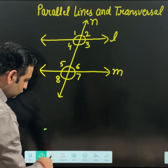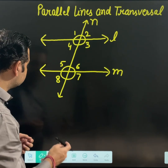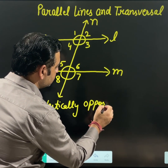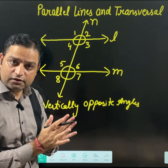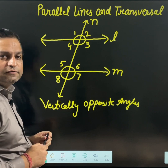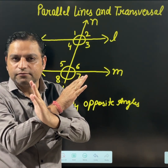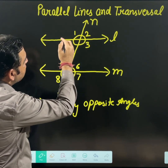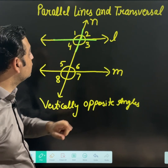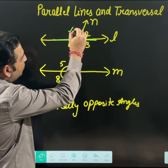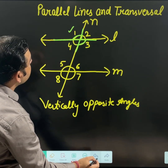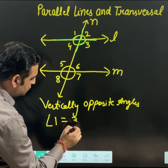The very first relation, which you might have already studied, is vertically opposite angles. Vertically opposite angles occur whenever two lines are intersecting each other. Check where the intersection is happening — lines are intersecting at this point. So vertically opposite angles will be like 1 and 3; these are opposite to each other and are known as vertically opposite angles. Vertically opposite angles are always equal, so angle 1 and angle 3 will always be equal.